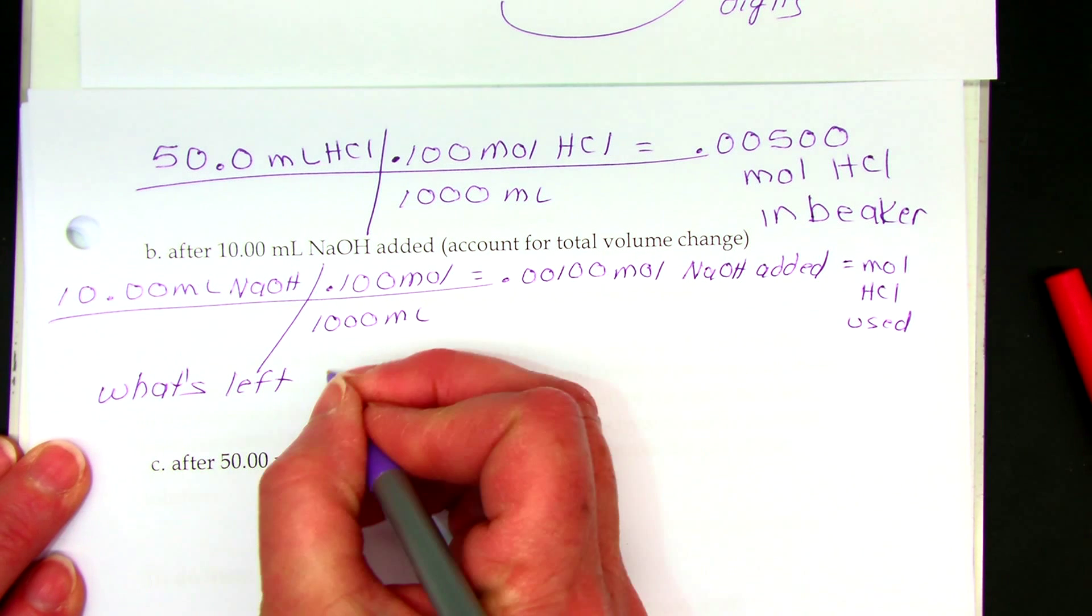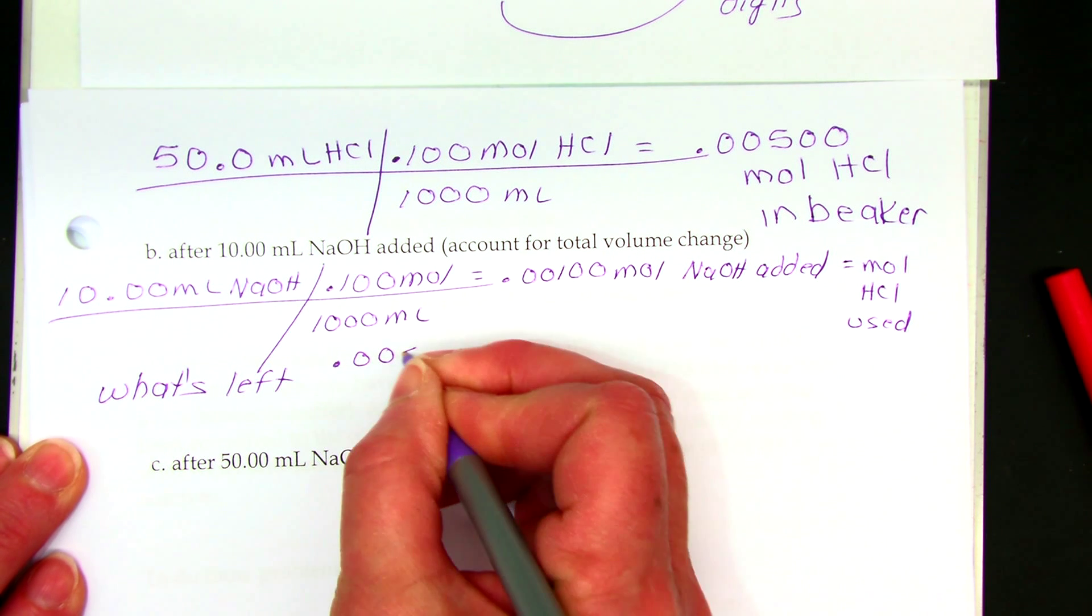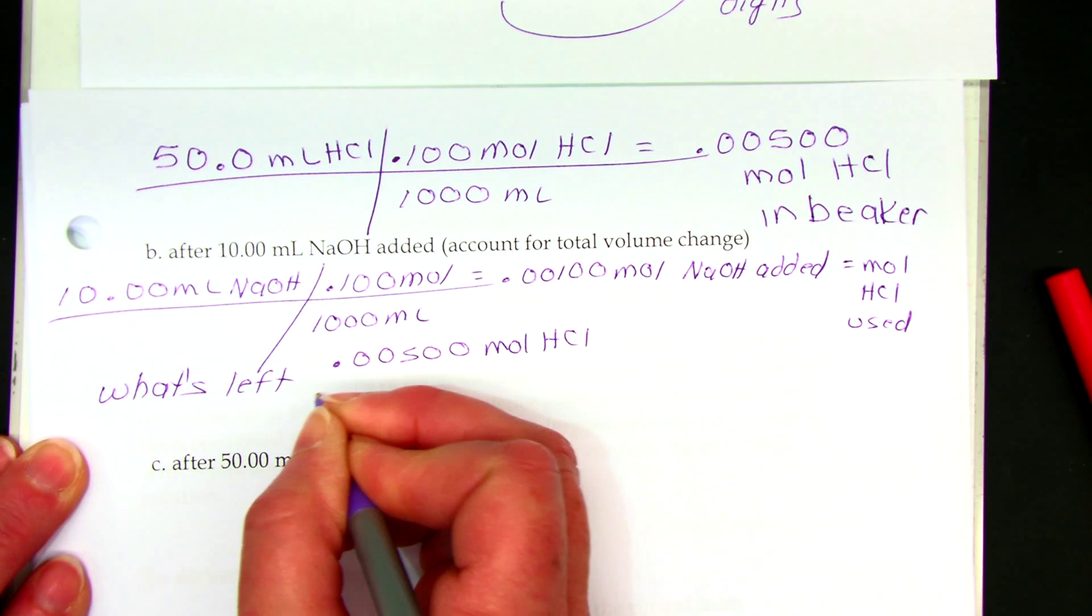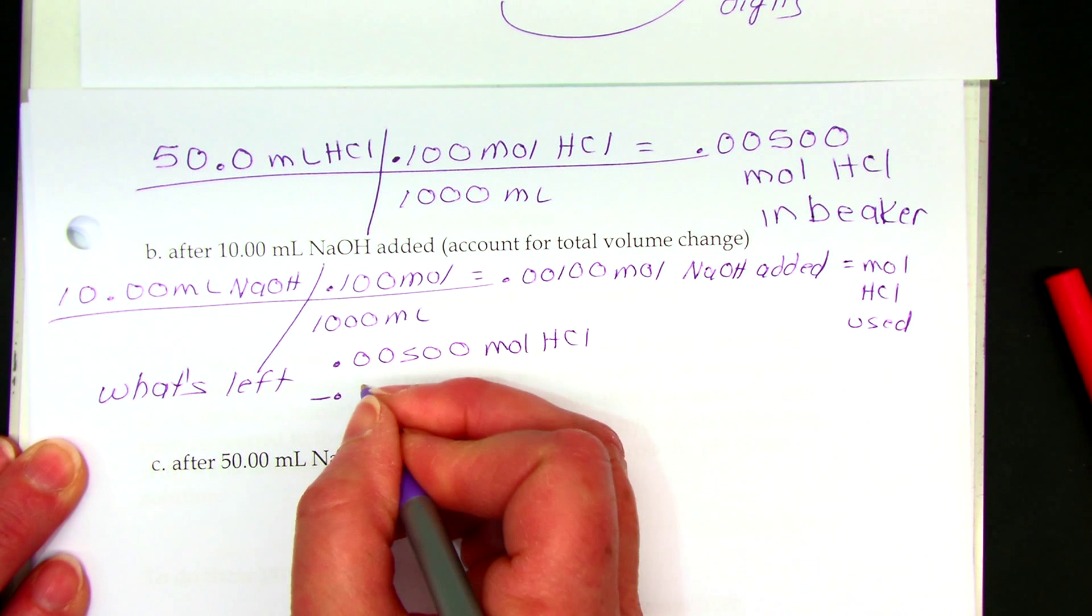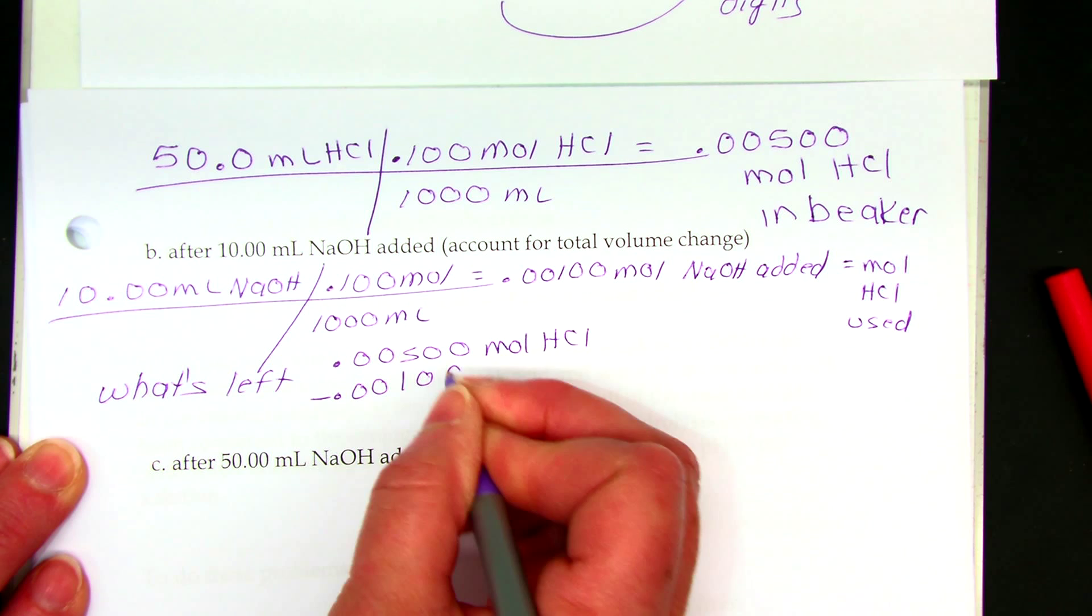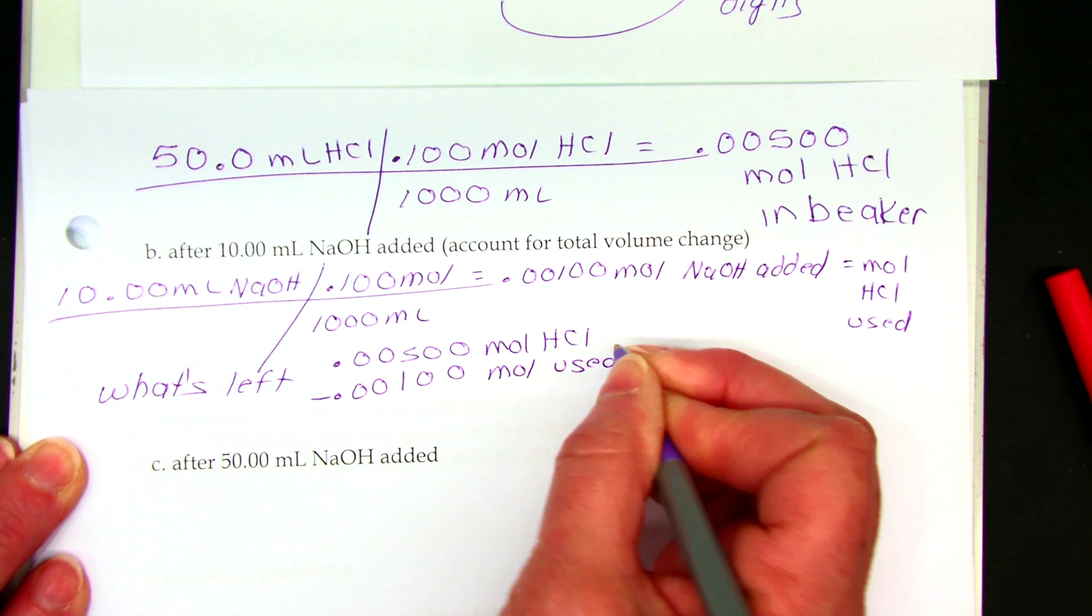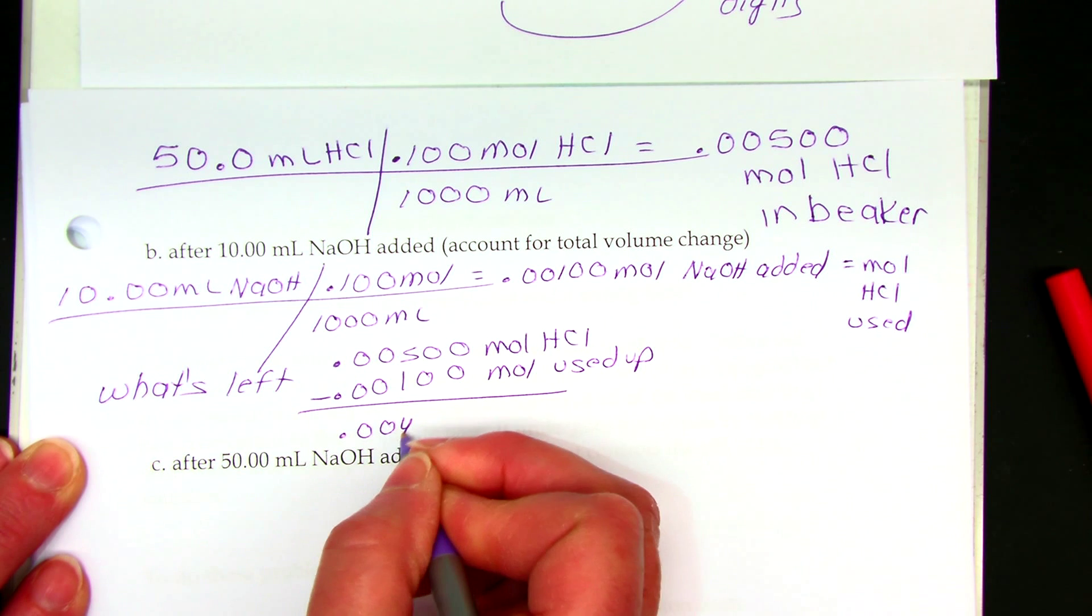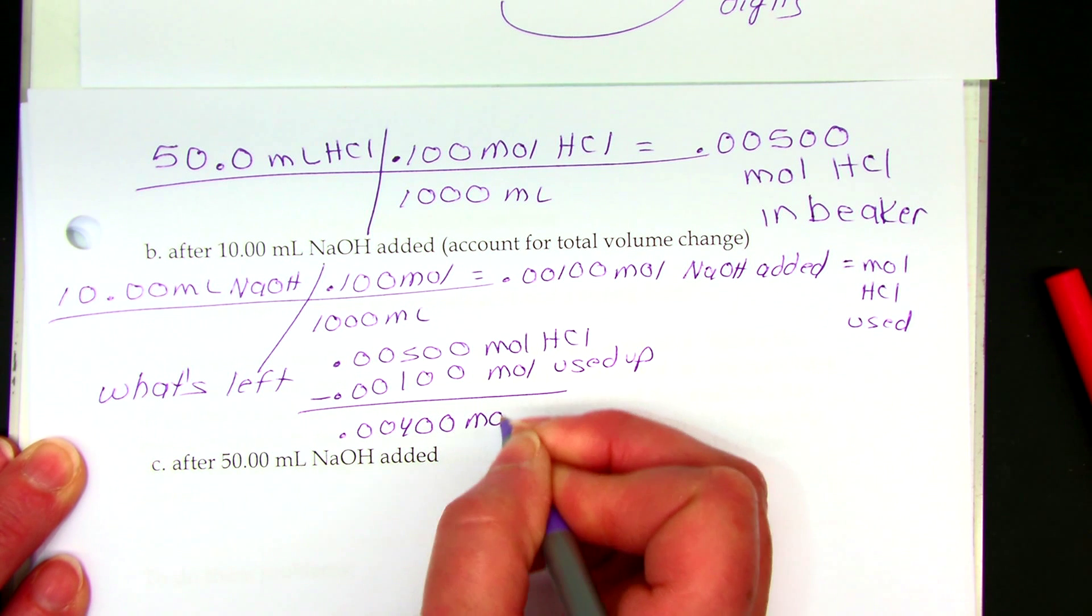So what's left, I had 0.005 moles of HCl, minus what got used up, 0.001 moles, used up by the sodium hydroxide, is 0.004 moles of HCl is left.